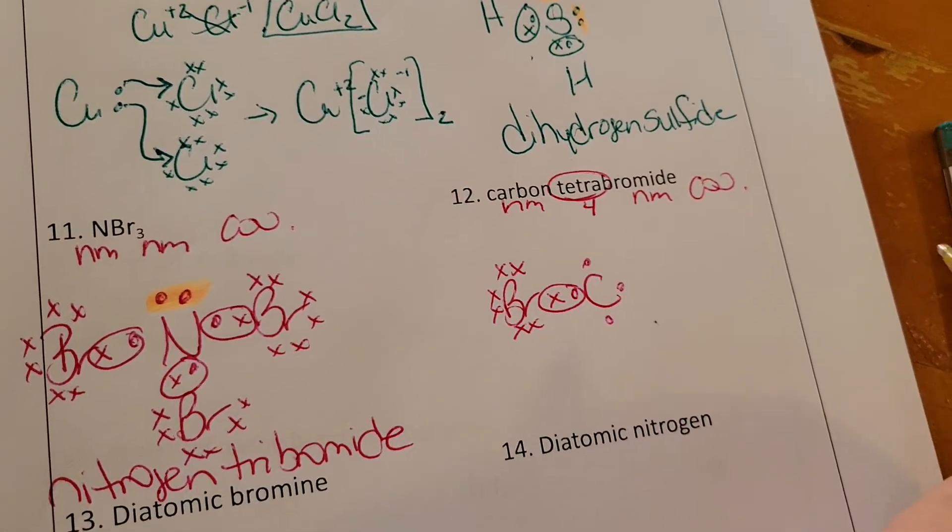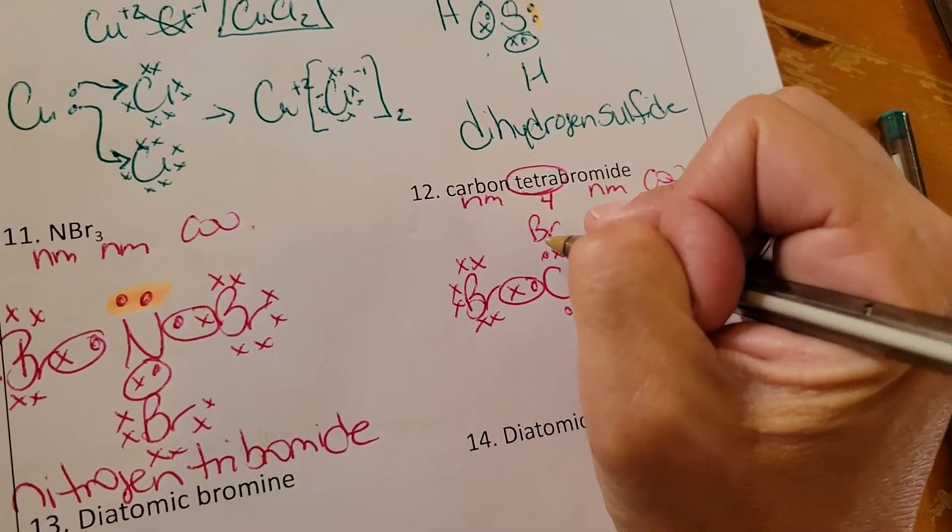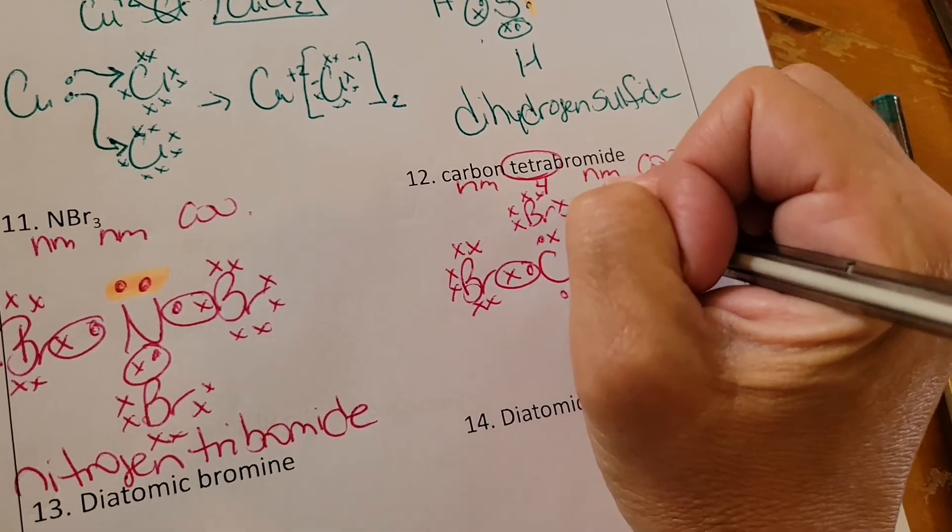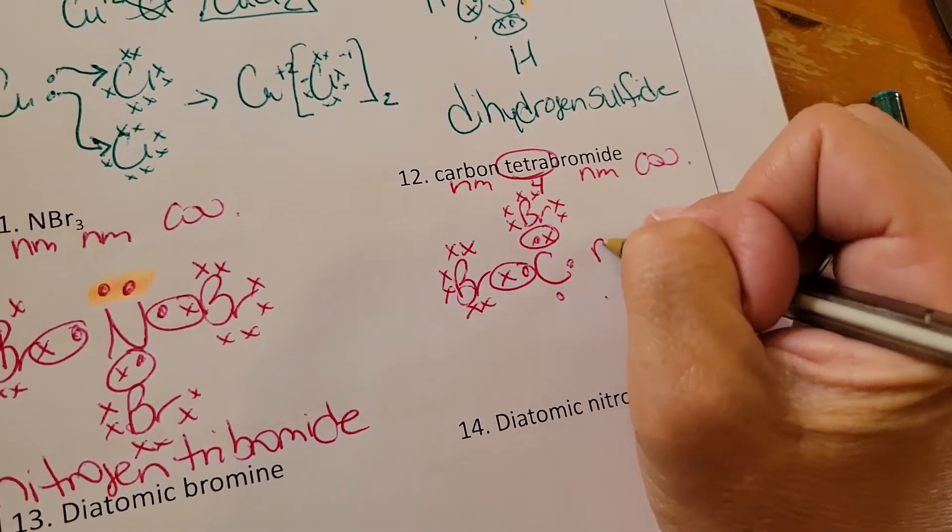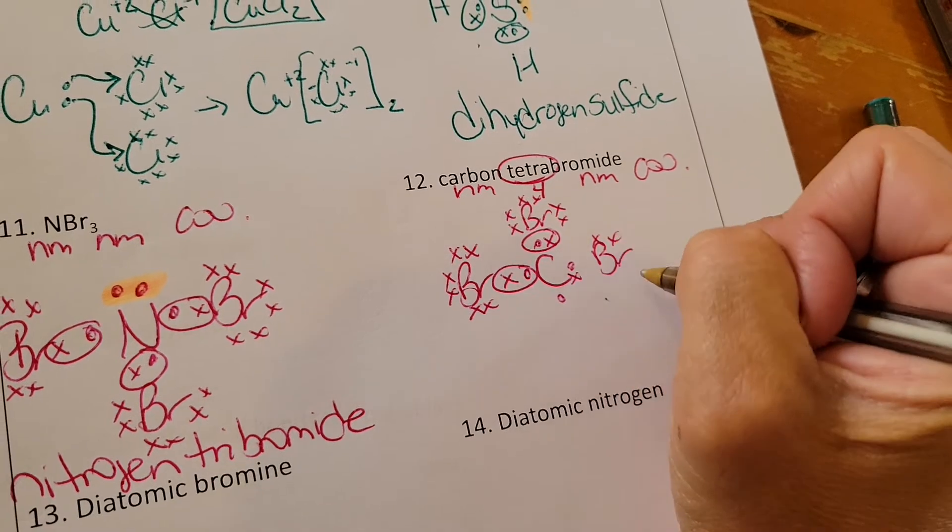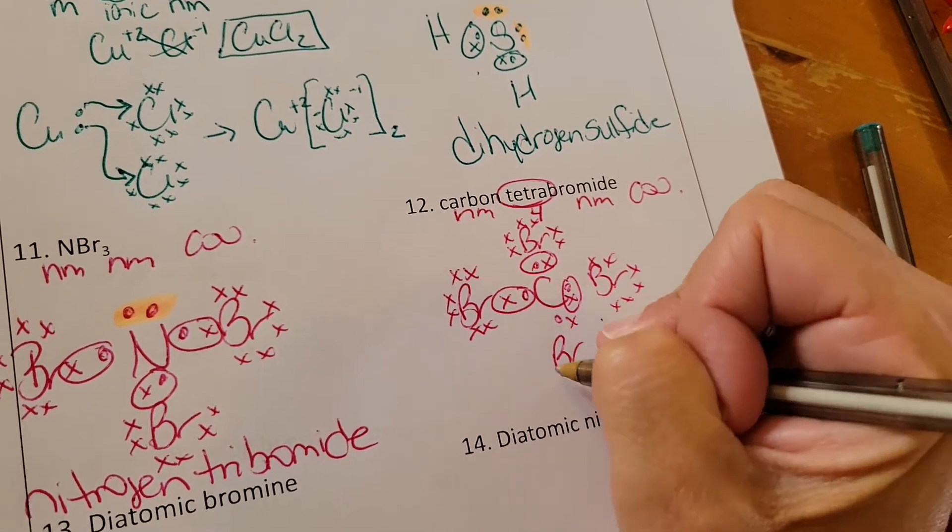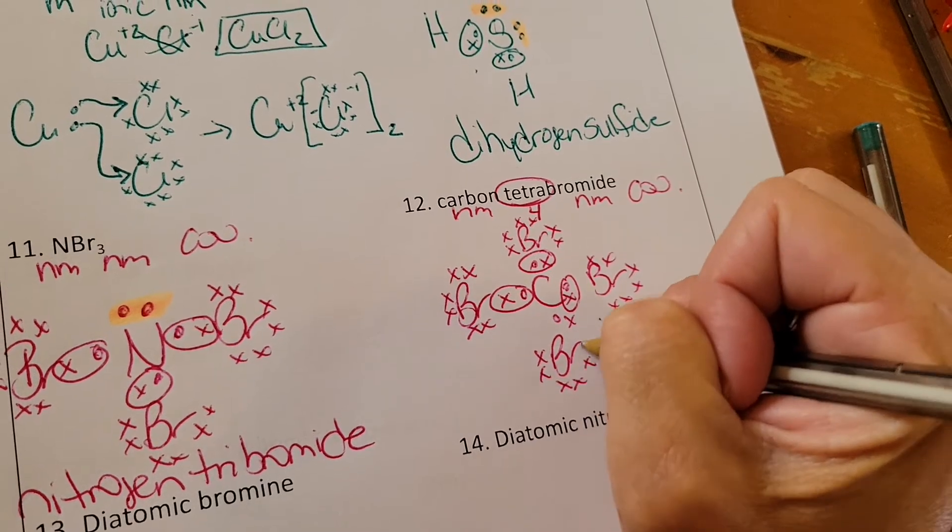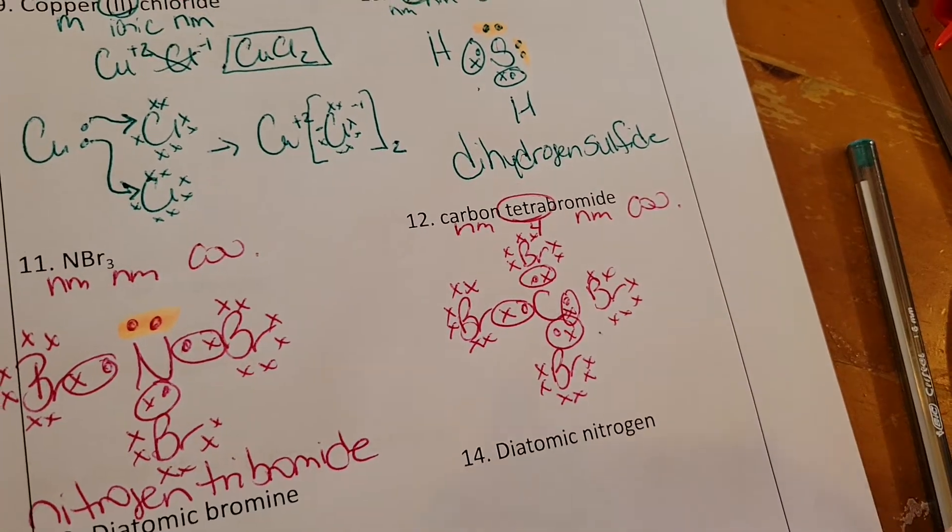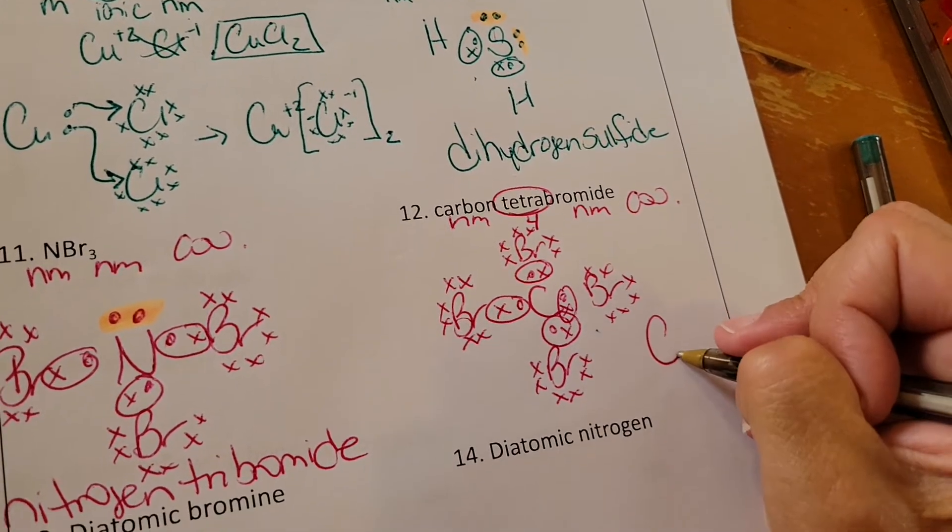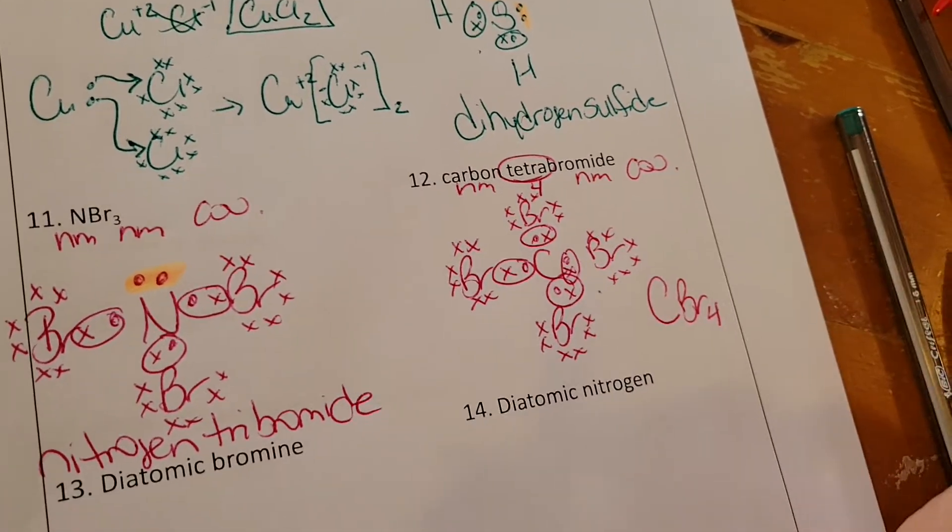And if I share, that gives me eight. So I'm just going to essentially put one of these bromines at each spot, and it's going to share each one of these spots. So I end up with CBr4 because tetra means four.